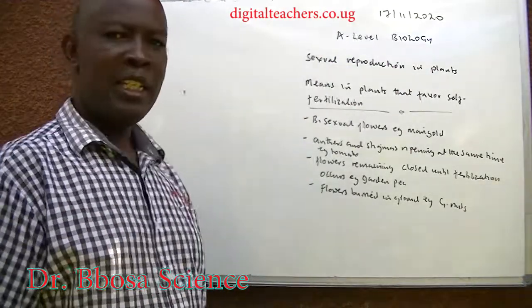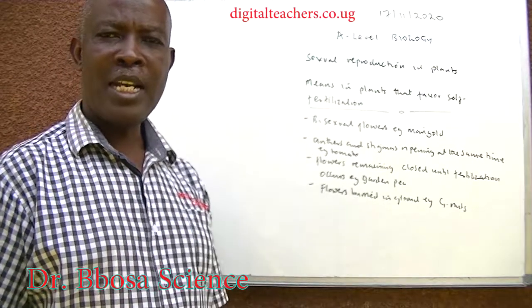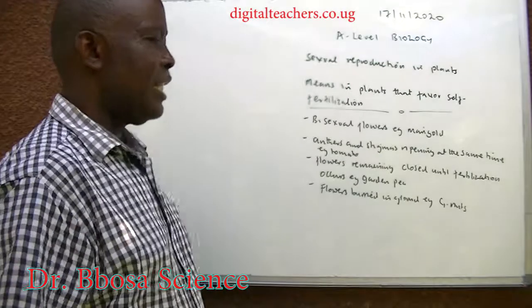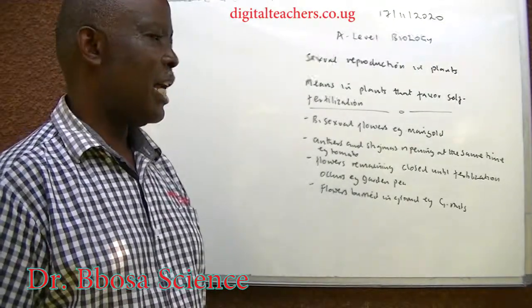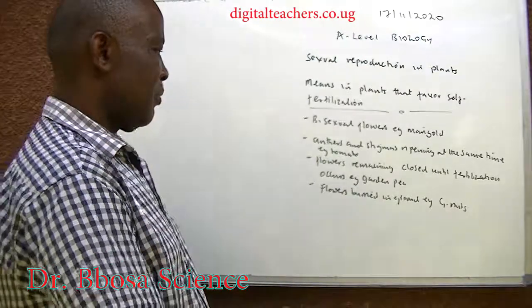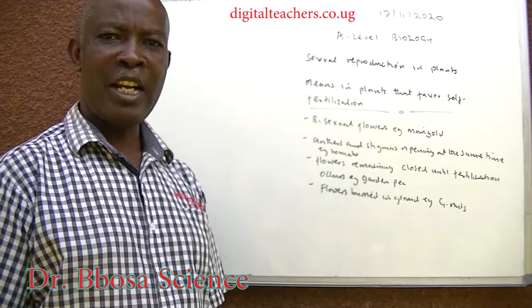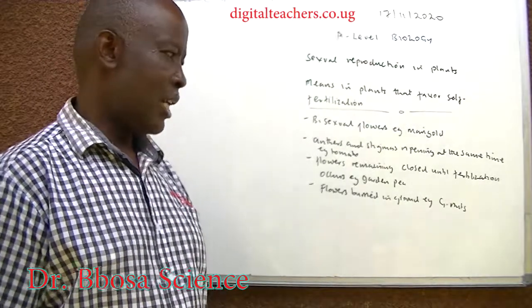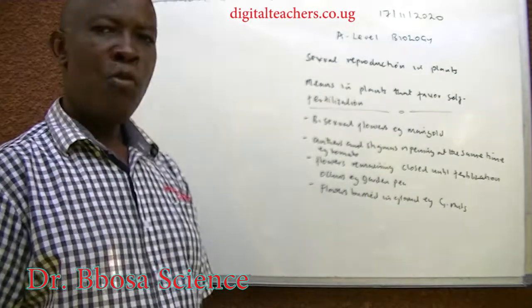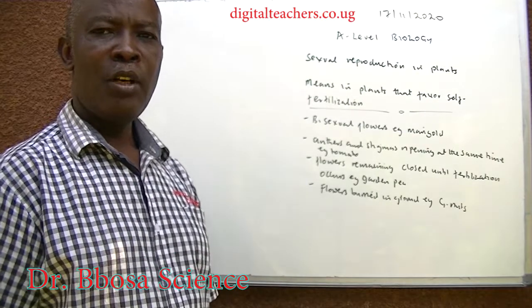Means in plants that favor self-fertilization: flowers being bisexual, having both androecium and pistil; anthers and stigmas ripening at the same time — for example, tomatoes; flowers remaining closed until fertilization is done — for example, garden peas; flowers being buried in the ground — for example, groundnuts.